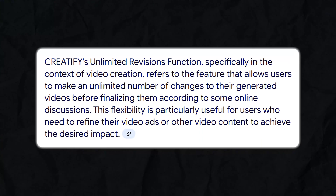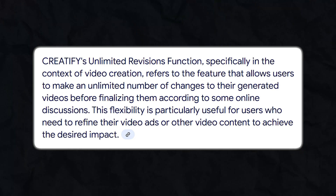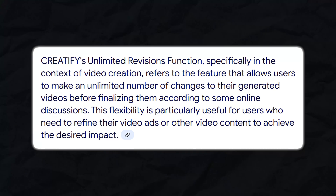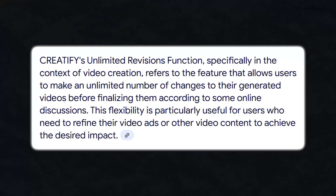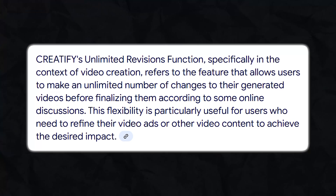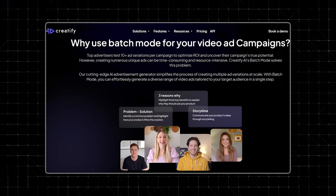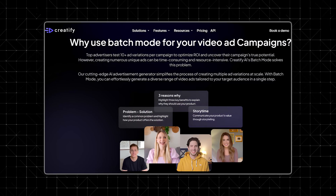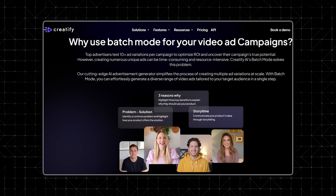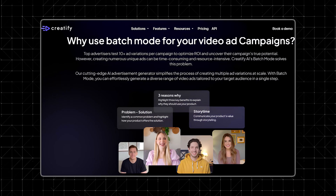Number four is unlimited revisions and testing variants. This is one of the biggest time savers. You can generate multiple ad versions instantly, each with different hooks, call to actions, voiceovers, and angles. Instead of testing one or two ad creatives, you can test 10 at once without burning your time or budget.